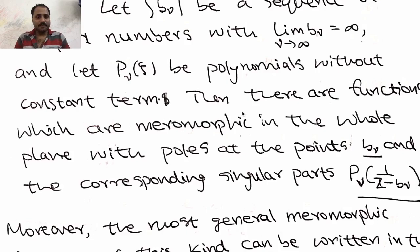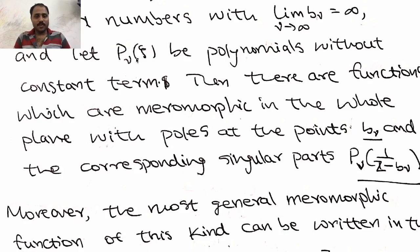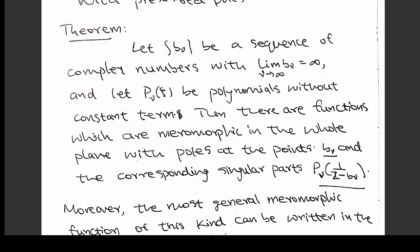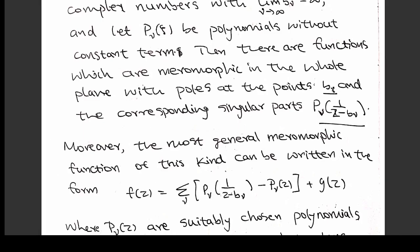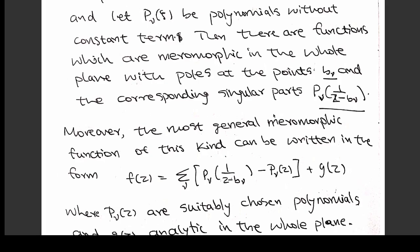Let us look at the statement briefly. We start from a sequence which diverges to infinity, and a sequence of polynomials are given. We assume that each of these polynomials does not have constant terms — that is for a specific reason. Given this sequence and this sequence of polynomials without constant term, we will prove that there exists a meromorphic function whose poles are exactly at the points b_ν, and the corresponding singular part — by that, what I mean is you expand the function in terms of the Laurent expansion around the point b_ν. There will be negative parts because it is a pole, and those negative parts, or the singular part, will be exactly p_ν of 1/(z − b_ν).